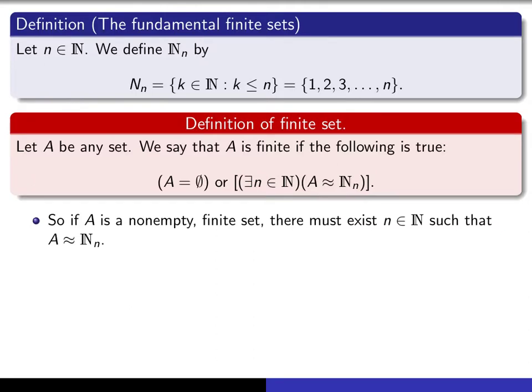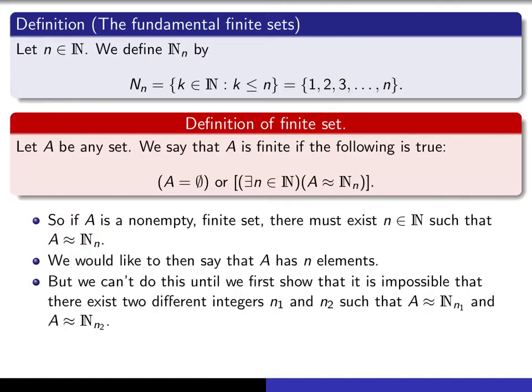There has to exist a natural number, little n, such that it has the same cardinality as N sub n, as this set here. We would then like to be able to say that A has n elements in it, if this is the case. But there's some technical work to be done before we can do that.